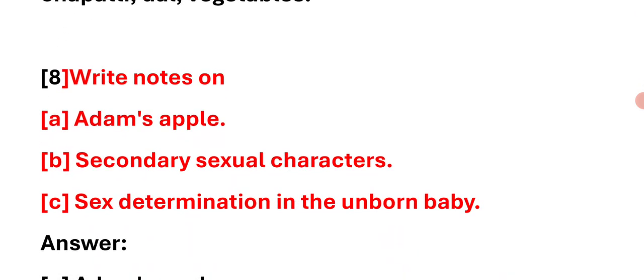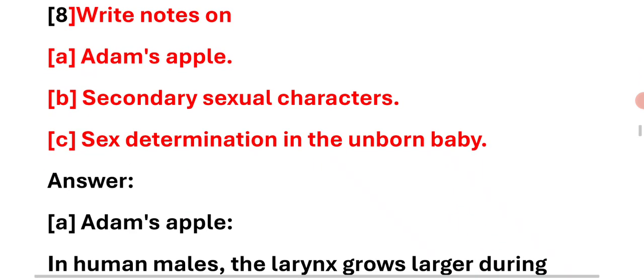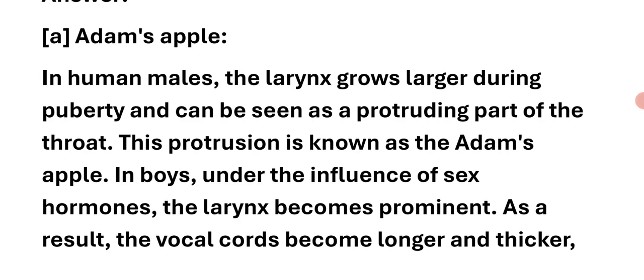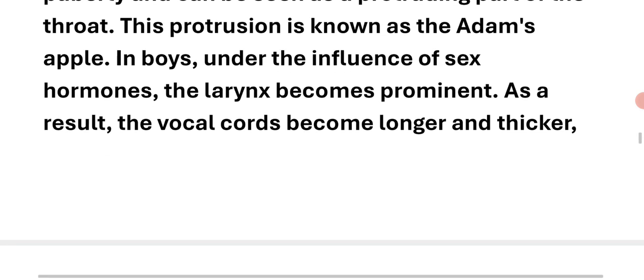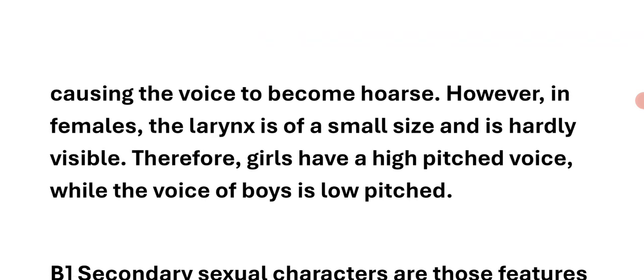Write a note on Adam's apple. In human males, the larynx grows larger during puberty and can be seen as a protruding part of the throat — this protrusion is known as the Adam's apple. In boys, under the influence of sex hormones, the larynx becomes prominent; as a result, the vocal cords become longer and thicker, causing the voice to become hoarse. In females, the larynx is of small size and is hardly visible; therefore, girls have a high-pitched voice, while the voice of boys is low-pitched.